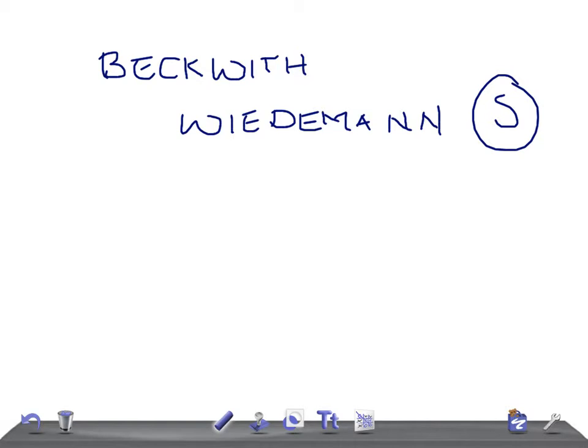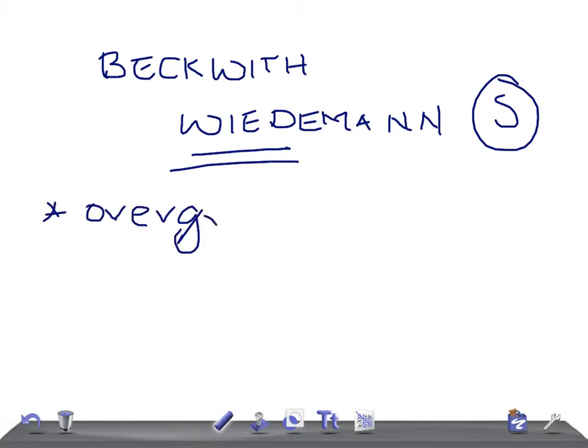Here I'm discussing briefly the very important points. Most of the time in examinations, they will give the clinical features and you have to diagnose the disease. Rather than going into detail regarding the genetics, it's better to know the clinical features. Remember the best way to remember the features of this disease — I remember it as 'Weidman,' meaning there is overgrowth.